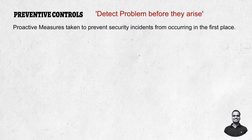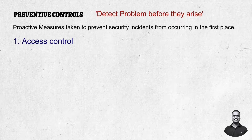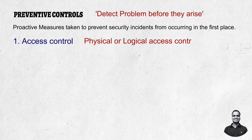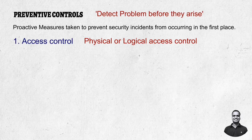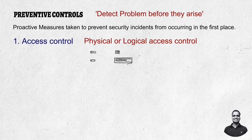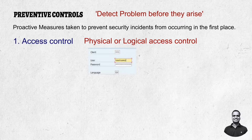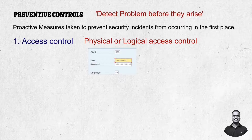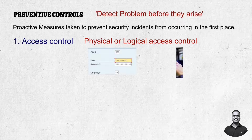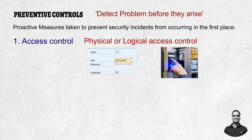Preventive controls include access control, which can be logical or physical. Logical access control restricts access to applications based on roles or rules — for example, vendor payment applications. Physical access control covers access to critical areas like server rooms or battery rooms, preventing unauthorized individuals from entering.